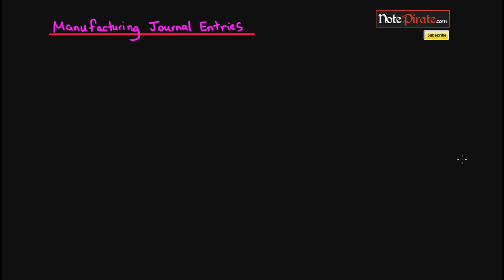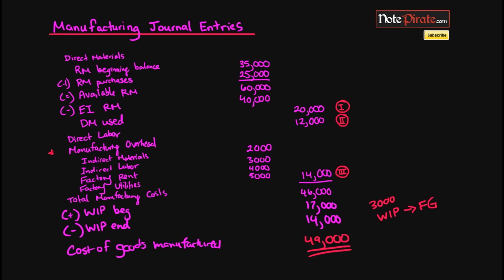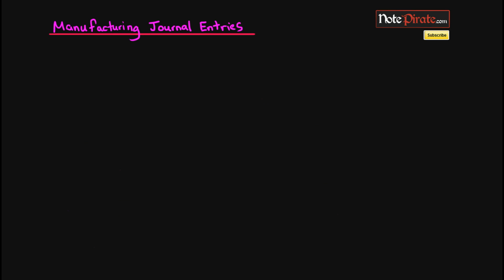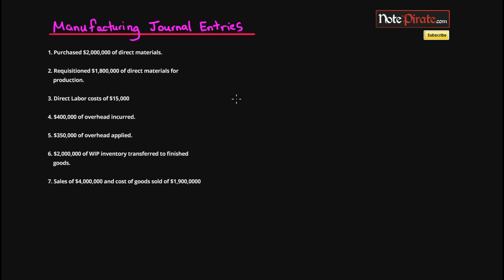If you enjoyed recording journal entries in financial accounting, you're going to get a bit of a break here because we're going to look at the cost of goods manufactured statement. We'll be journalizing the usage of items like direct materials, direct labor, and manufacturing overhead incurred, as well as journalizing transfers between work in process inventory and finished goods. I have a bunch of items listed on the left-hand side and we're going to journalize each of these while keeping T-account balances for each account.